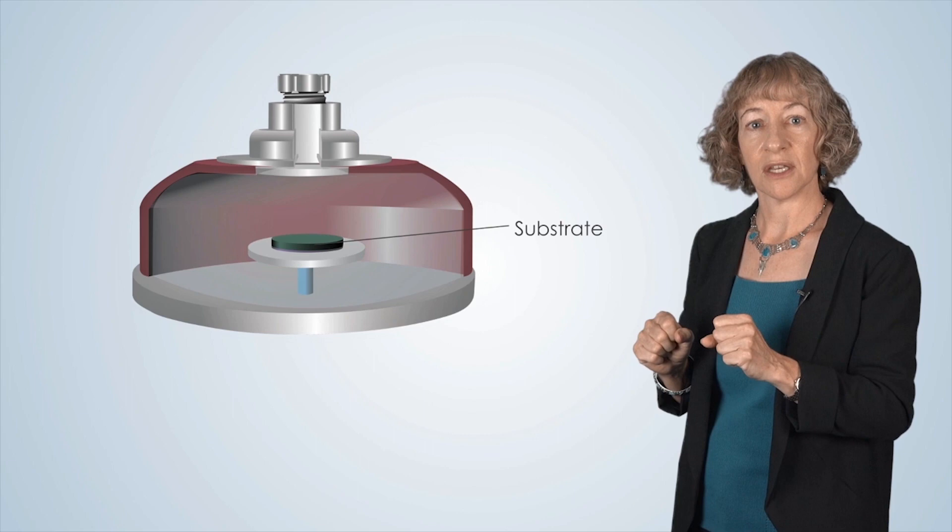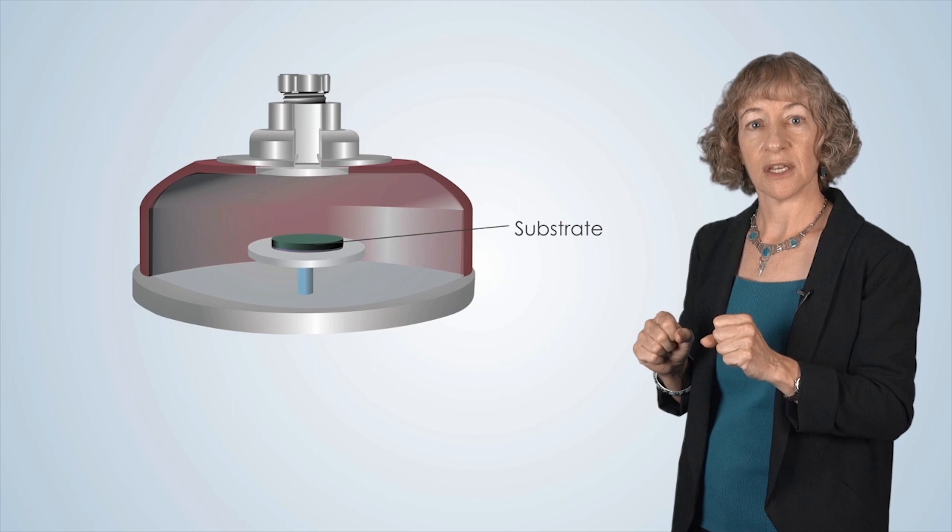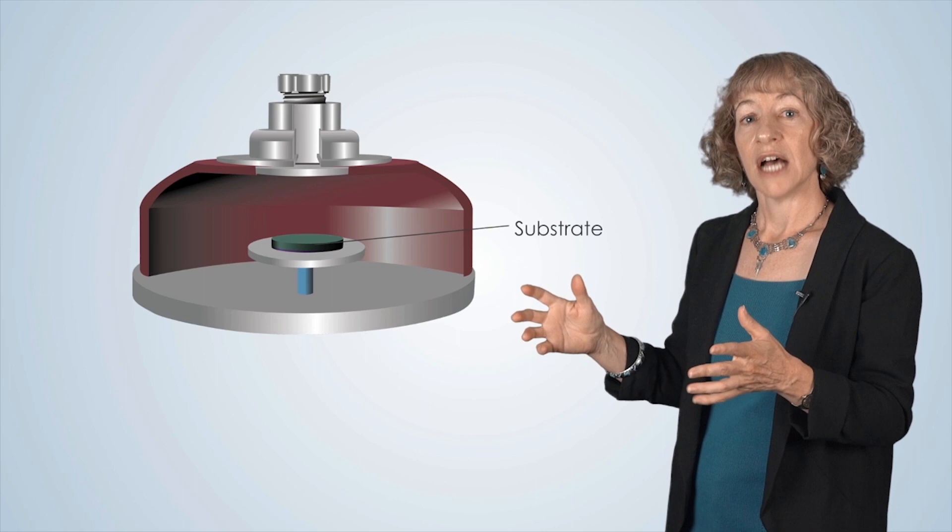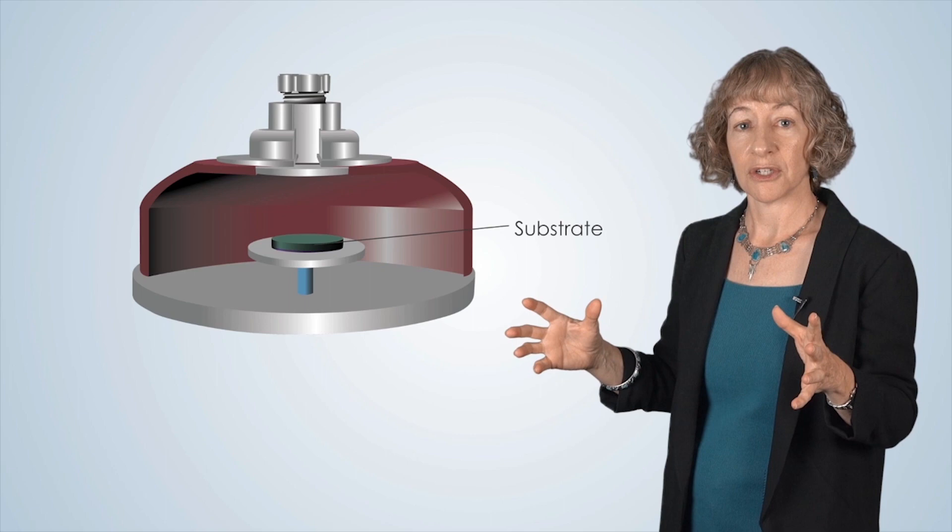When the thin film deposition is complete, we pump the chamber down again to remove all of the gases and byproducts of the deposition process. Then, we fill the chamber with nitrogen, or we say the chamber is vented, until the pressure in the chamber is the same as the pressure in the room, which is atmospheric pressure. Then, we can open the chamber and remove the sample.